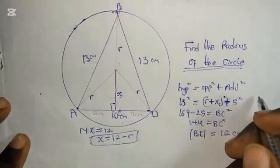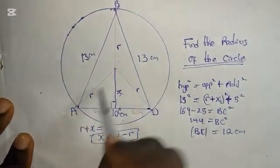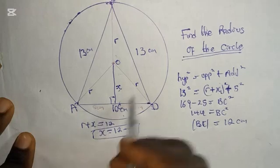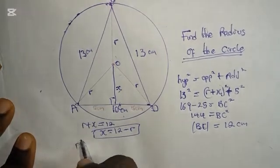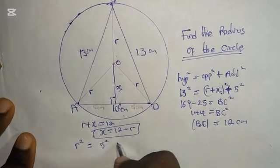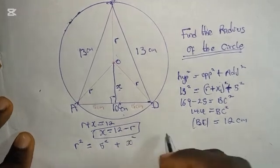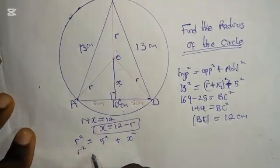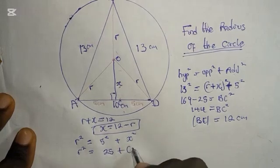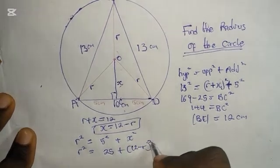So now, moving to this small triangle where this is center O, from the small triangle using the Pythagoras rule, we are going to have R² = 5² + X². Now we know that X = 12 - R.